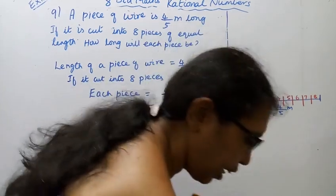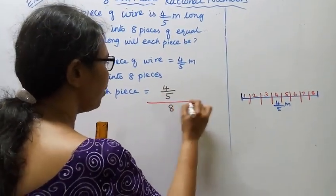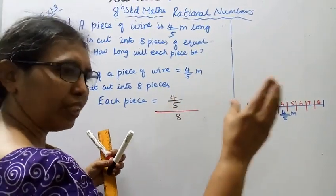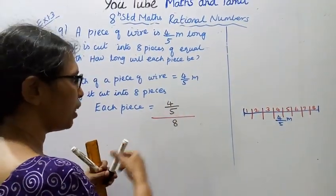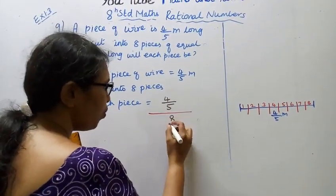4 by 5 divided by 8. When we cut into 8 pieces, we multiply by the reciprocal. So we write 8 by 1.